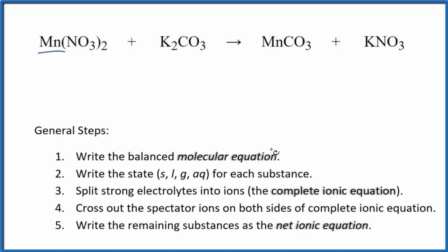The first thing we need to do when we balance net ionic equations is balance the molecular equation, and this is our molecular equation. It looks like we have two potassium atoms here and just one here. Let's put a 2 in front of the potassium nitrate. Now we have two nitrates, and we have two nitrates here, so that's good. We have manganese, manganese, carbonate, and carbonate. So this is the balanced molecular equation.